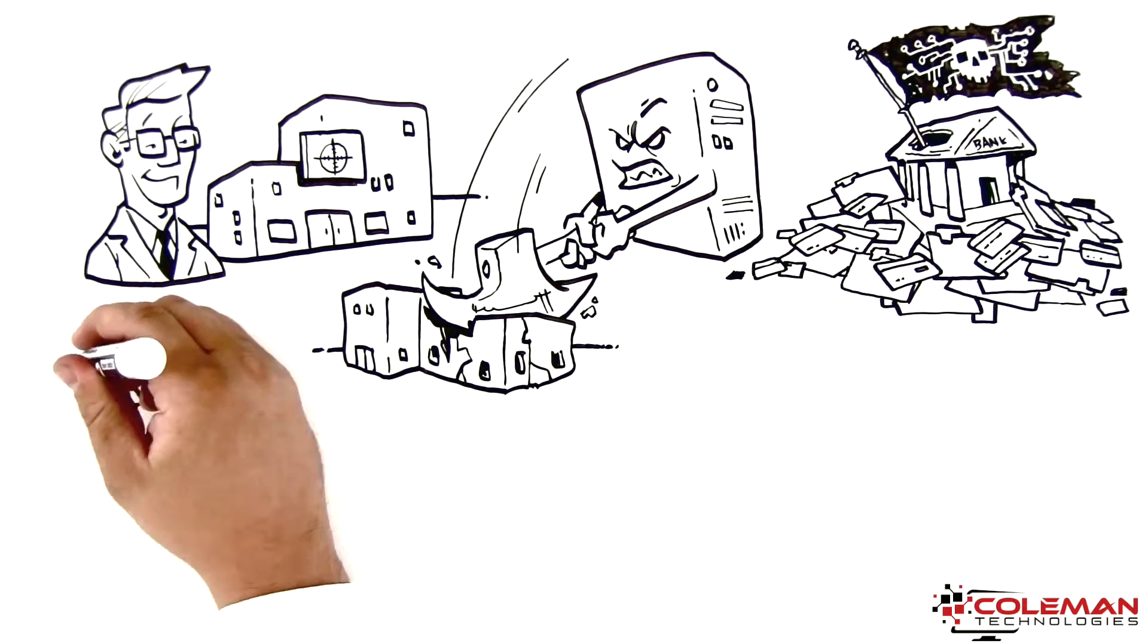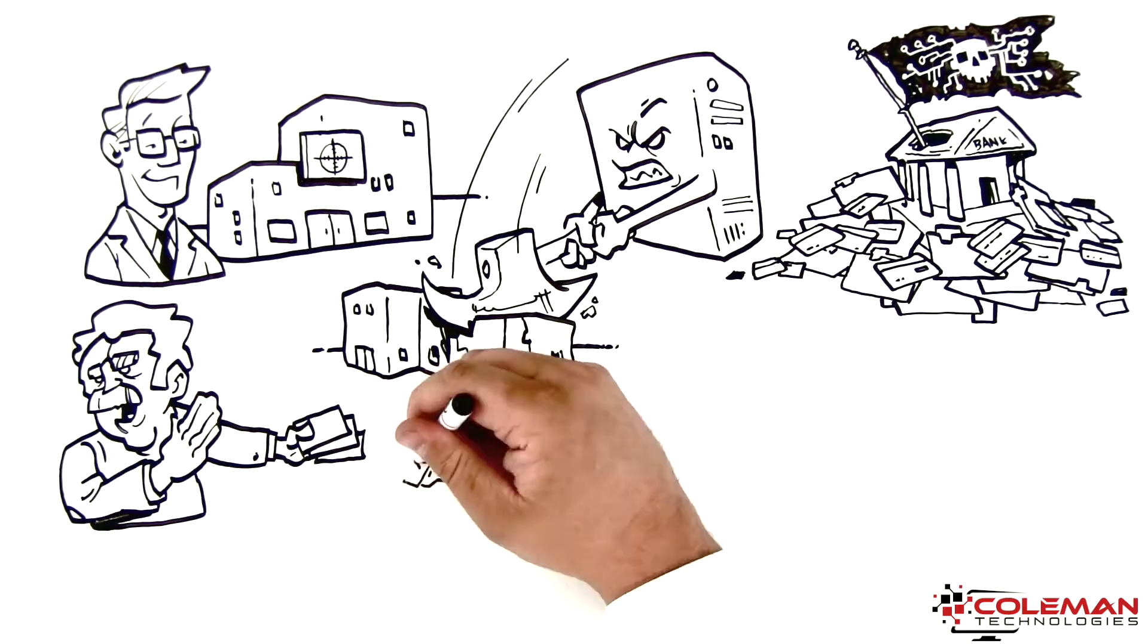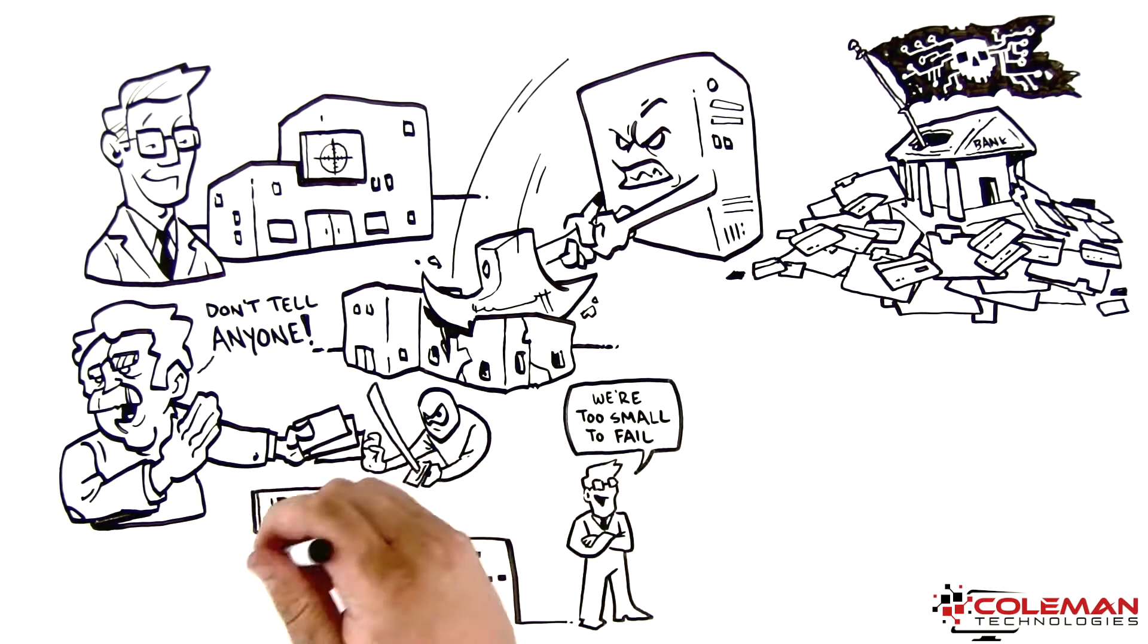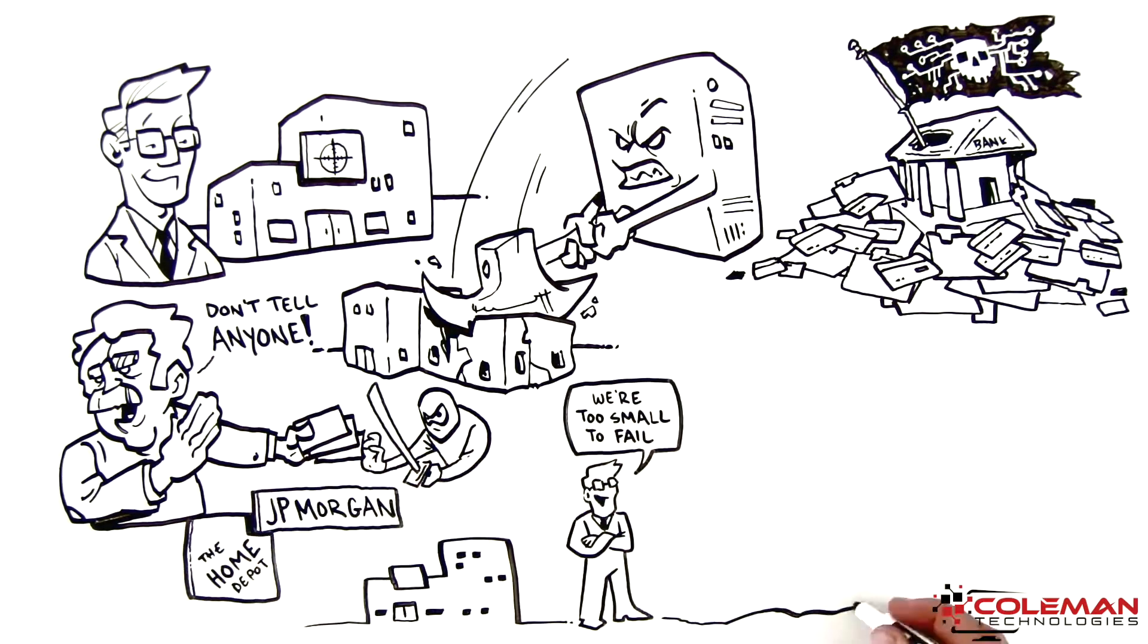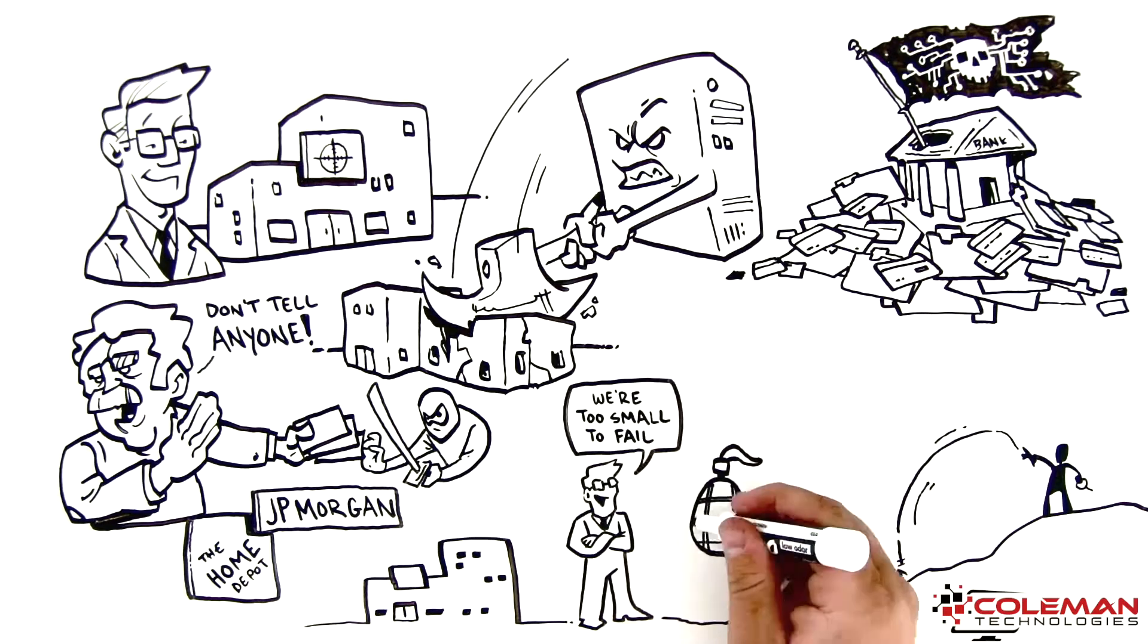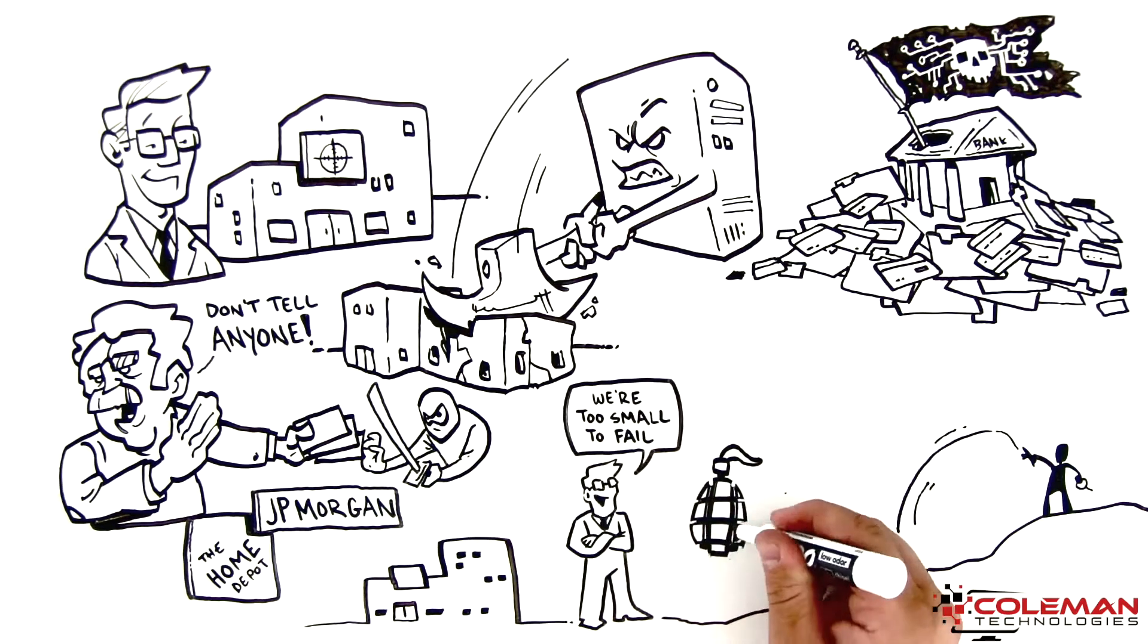Some are even being funded by their own government to attack businesses. Think you're not in danger because you're small and not a big target like J.P. Morgan or Home Depot? Think again. 82,000 new malware threats are being released every single day, and half of the cyberattacks occurring are aimed at small businesses.